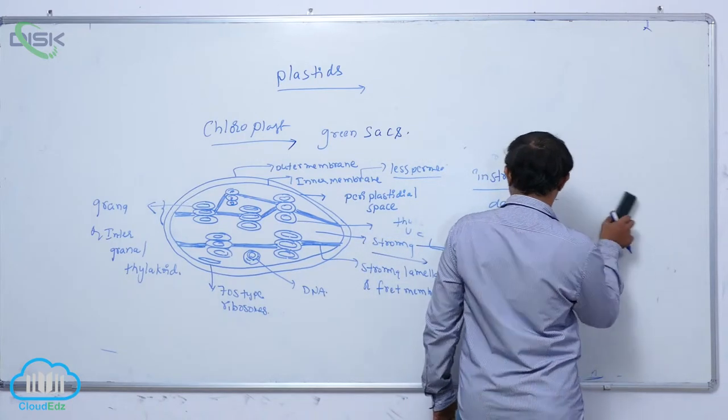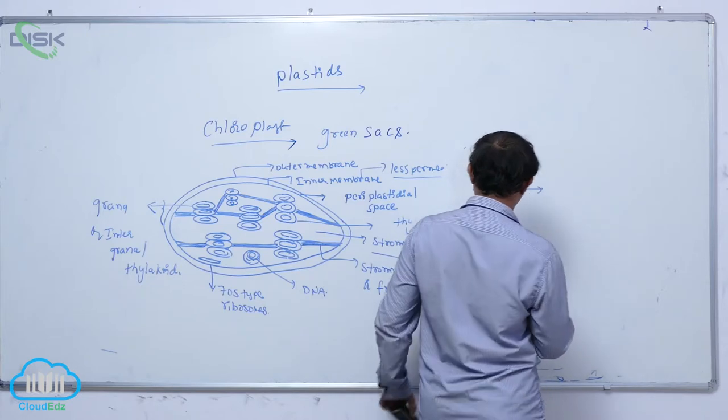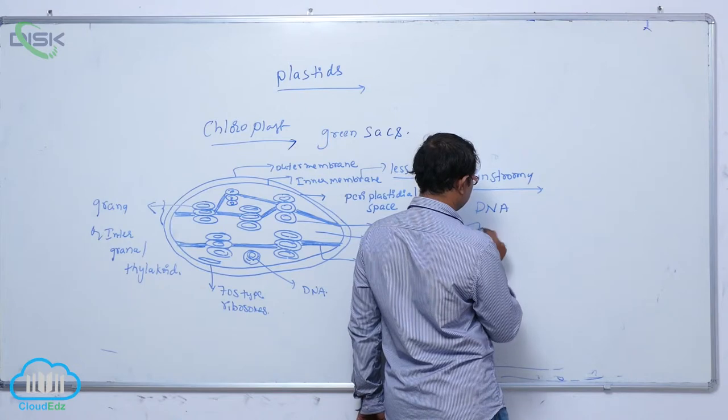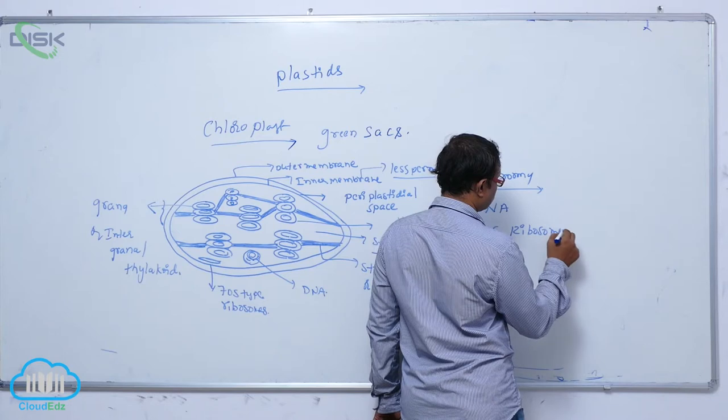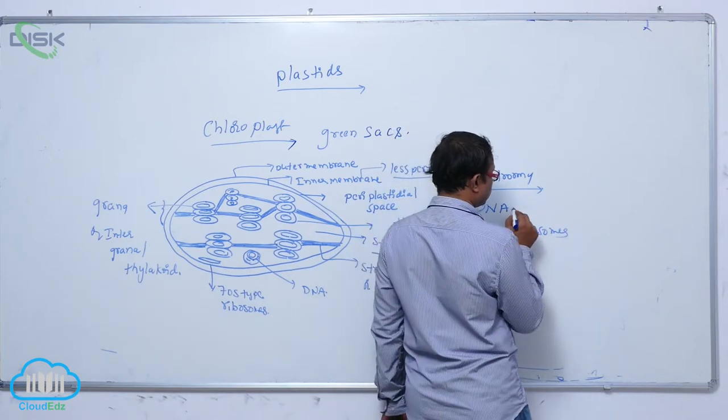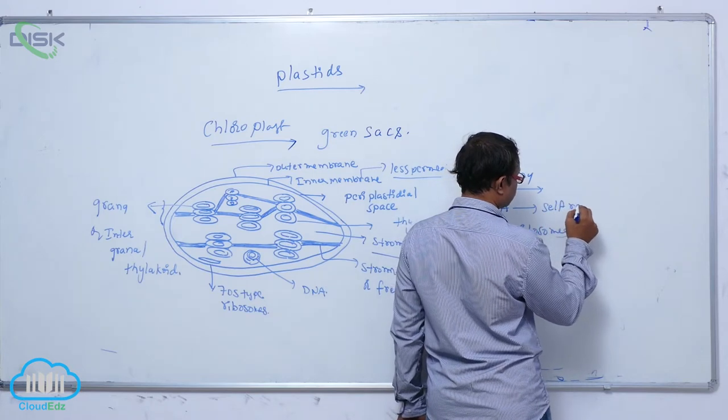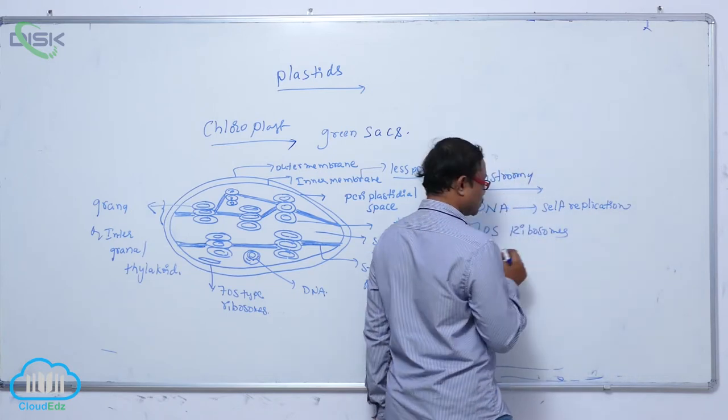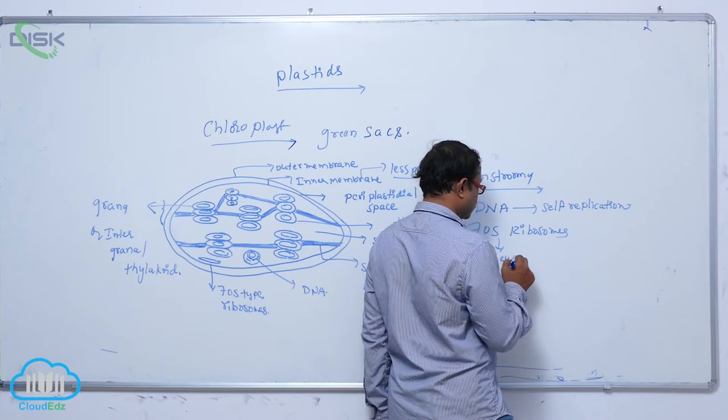In stroma, DNA and 70s type of ribosomes are present. Due to the presence of the DNA, it is involved in self-replication process. Due to the presence of 70s ribosome, they are involved in protein synthesis.